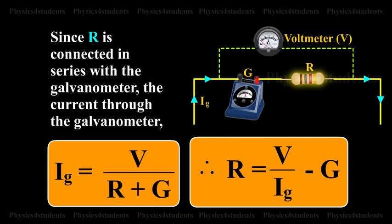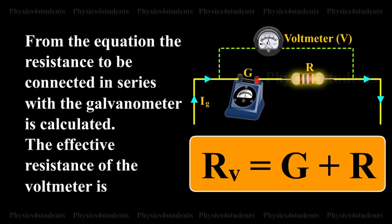Therefore, R is equal to V by IG minus G. From the equation, the resistance to be connected in series with the galvanometer is calculated.